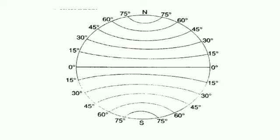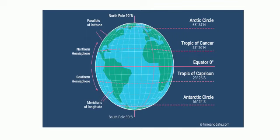All lines of latitude are circles and parallel to the equator. Some important latitudes are: 0° latitude — equator or great circle; 23.5° north latitude — Tropic of Cancer; 23.5° south latitude — Tropic of Capricorn; 66.5° north latitude — Arctic Circle; 66.5° south latitude — Antarctic Circle; 90° north — North Pole; and 90° south — South Pole.